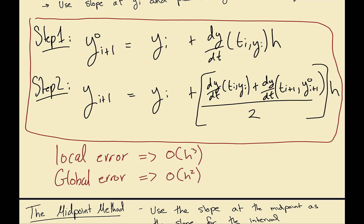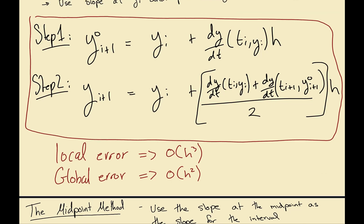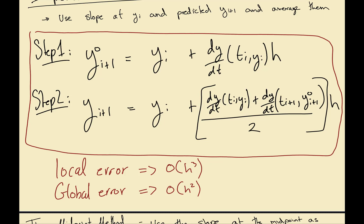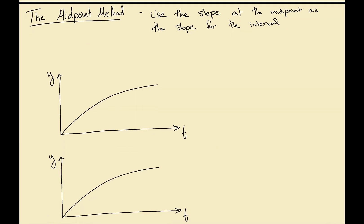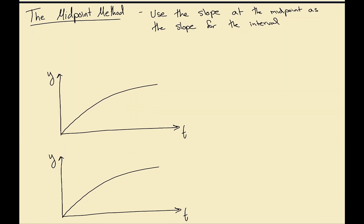That's the review from last class. Now we'll get into the midpoint method. Instead of taking an average of two points, what we're doing is taking the slope at the midpoint. First we predict what the midpoint is — just like before we have an initial point at (ti, yi) and use the slope there to predict the midpoint.